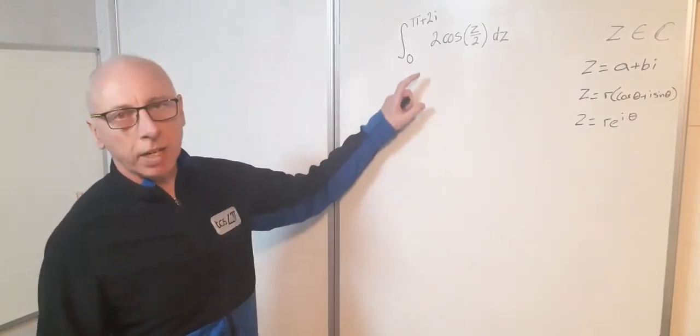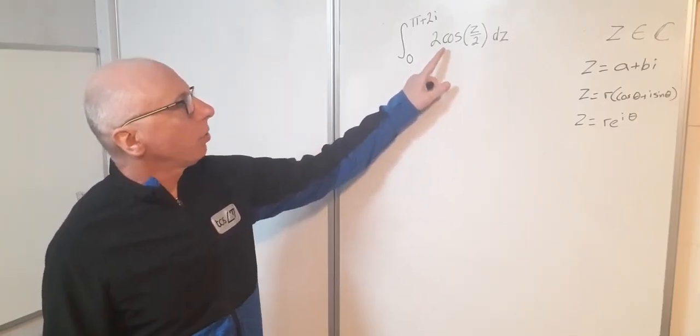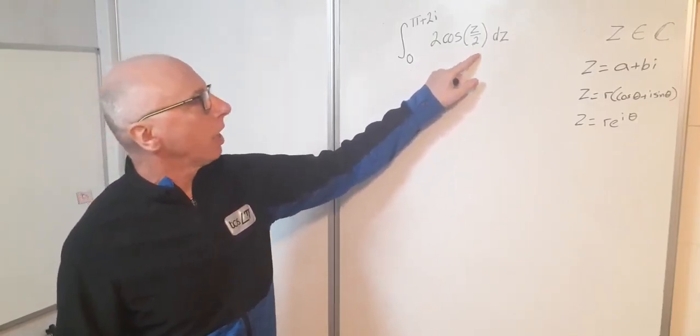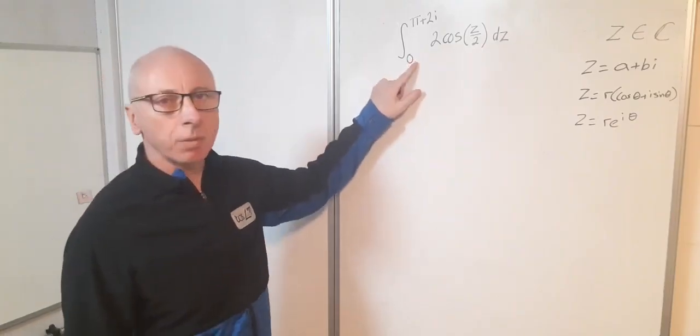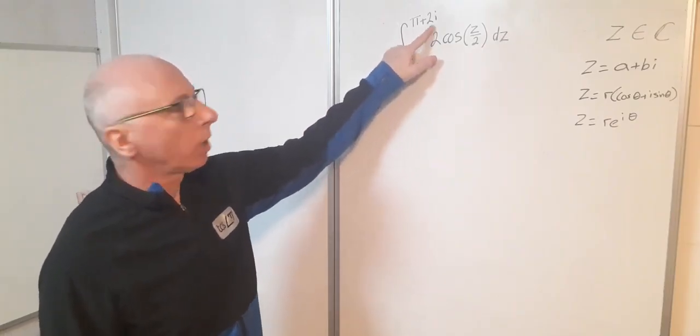So in this video we're going to have a complex integral. I've got 2 cosine z over 2. I'm going to integrate with regards to z and my parameters here I've got 0 and pi plus 2i.